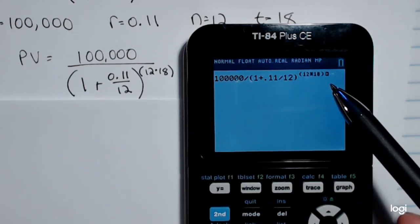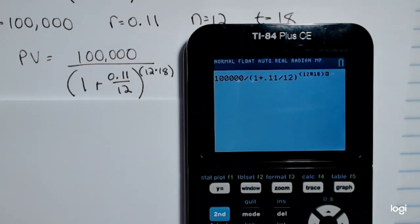That's going to be 12 times 18. And then if you're using an older calculator, you'll want to close your parentheses, and then I'll arrow out of that and press enter.